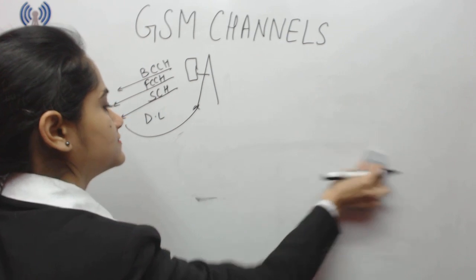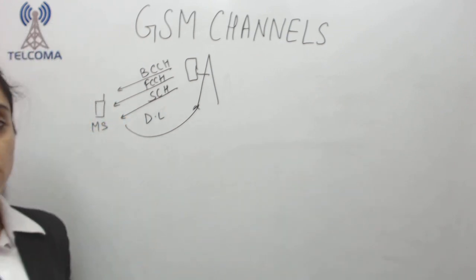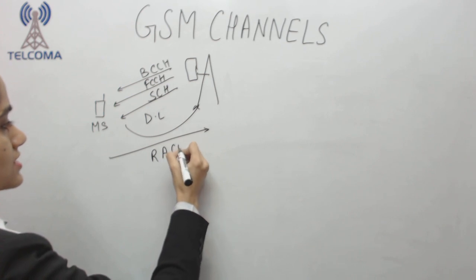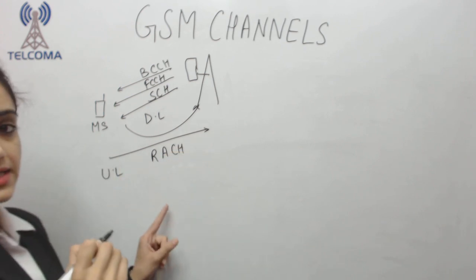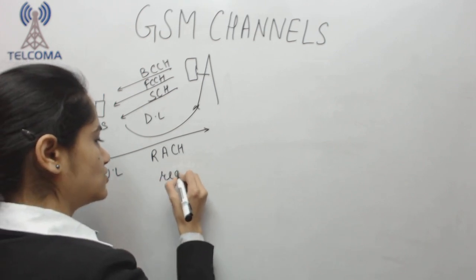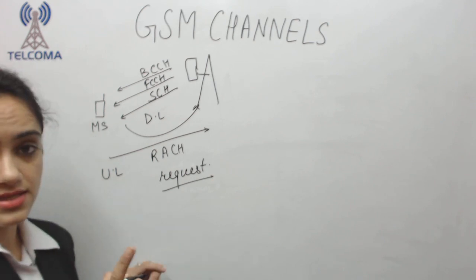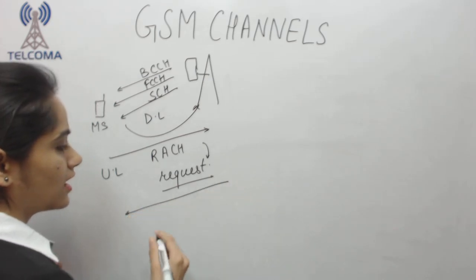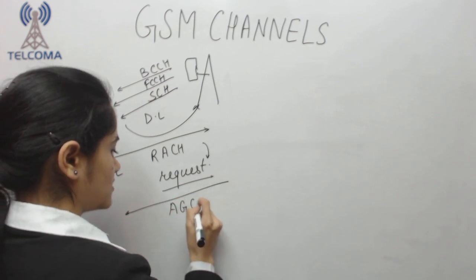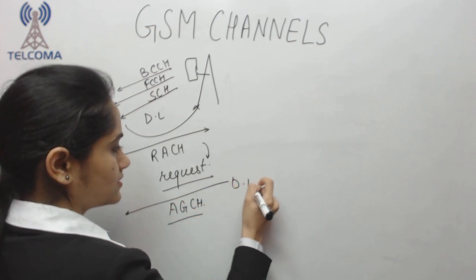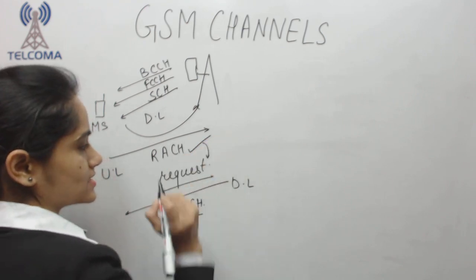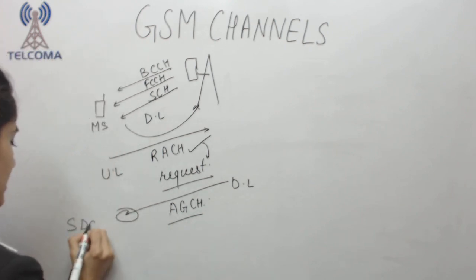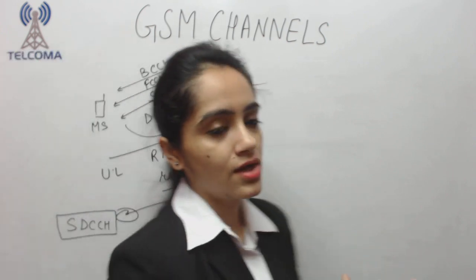When we want to make a call, we use the network via a channel that is the first uplink channel: RACH, the Random Access Channel. It is used for request purposes — when we send a request to the network, the network gives us a grant in the form of AGCH, the Access Grant Channel, which is in the downlink direction. With the Access Grant Channel, the network will give us a dedicated channel.